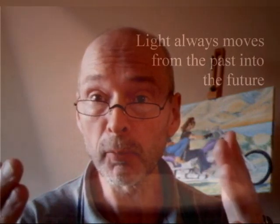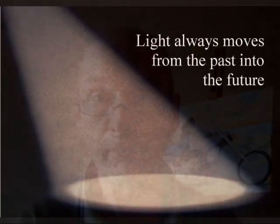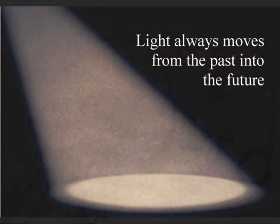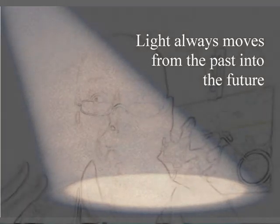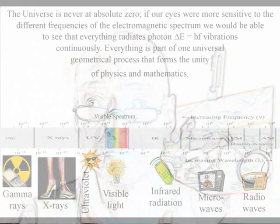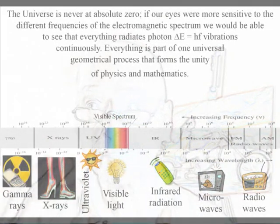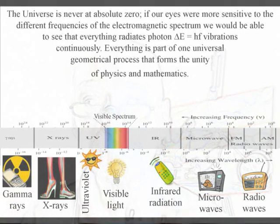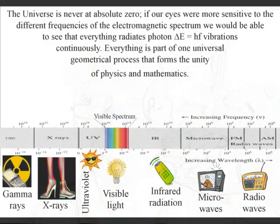Some people say that time is just a human concept connected to movement. They say when there is no movement, there is no time. But if our eyes were more sensitive to the light of the electromagnetic spectrum, we would be able to see that there is always movement in the form of light photon vibrations or oscillations, with everything radiating light in a similar way to an electric light bulb.